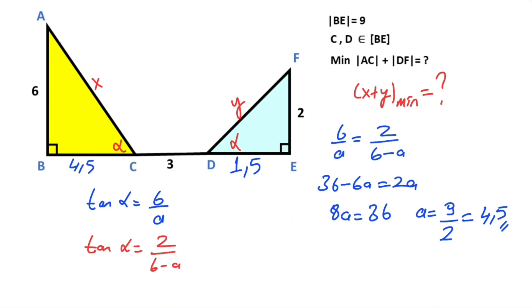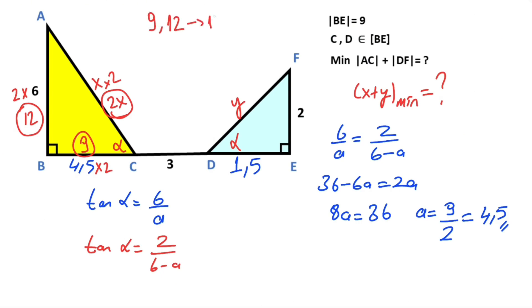If you focus on this triangle and multiply all the sides by 2, we can see that this triangle is actually a special right triangle with sides 9, 12, and 15. This triangle is a 9-12-15 special right triangle. That means 2x must equal 15, so x is going to be 7.5.